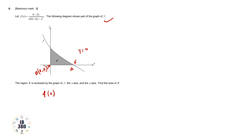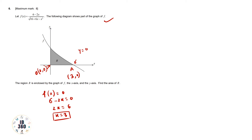Since f(x) = 0, the complete function is 0. The denominator multiplied by 0 means we only need the numerator: 6 - 2x = 0, so 2x = 6, giving x = 3. Therefore, point A has coordinates (3, 0).